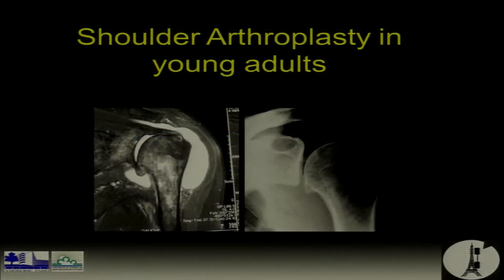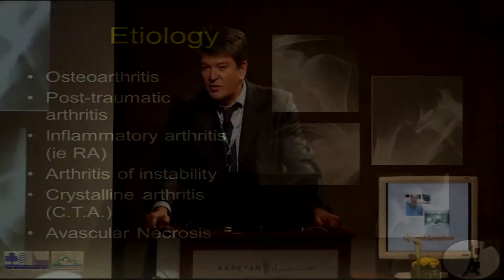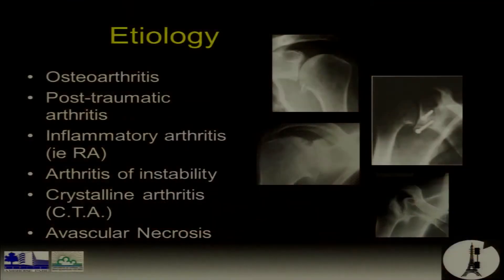We're going to look at arthritis in young athletes. If you look at the etiology, these patients present with arthritis, and we have to consider post-traumatic arthritis. One of the highest etiologies remains instability — either a patient who never had surgery and is not unstable anymore but just painful, or one who had surgery with a prominent bone block. It can also be inflammatory arthritis, arthritis of instability, crystalline arthritis — which is quite rare in young adults — or avascular necrosis.